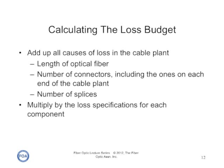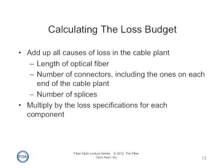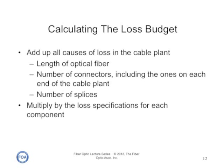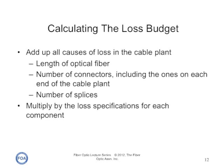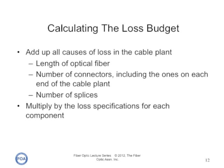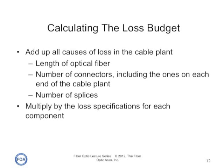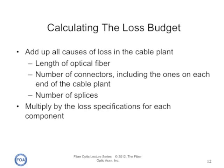Calculating the loss budget is straightforward. We add up all the causes of loss in the cable plant: the length of optical fiber times its attenuation coefficient in dB per kilometer, the number of connectors including the ones on each end of the cable plant times the average connector loss, and the number of splices times the average splice loss. Some people question whether to include the connectors on either end of the cable plant, saying they have no loss since one is plugged into a transmitter and the other into a receiver. But the definition of cable plant loss includes those connectors, because very often we're measuring a permanently installed cable plant that will be connected to transmitters and receivers by patch cords.